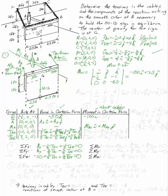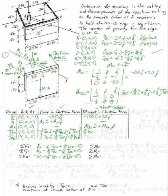The force at A passes through the origin, so it contributes no moment there. The moment due to TBC at the origin is the cross product of (-2, 2, 0) and (-1/3, -2/3, 2/3) times TBC, which gives (4/3)i + (4/3)j + 2k, so the moment is (4/3)TBCi + (4/3)TBCj + 2TBCk.